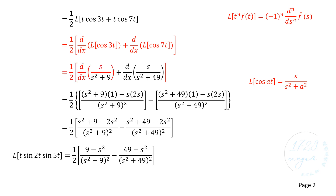Take Laplace transform for cosine 3t and cosine 7t. Differentiate: s by s squared plus 9, and s by s squared plus 49.